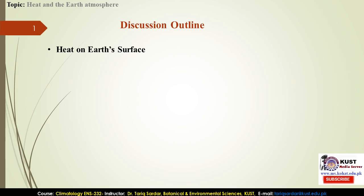We will know about the heat budget on the Earth's surface, coming toward the Earth at the stratospheric level and the Earth's atmospheric level. Up next, we will discuss the greenhouse effect — a very important topic from an environmental aspect — on the basis of its processes, properties, and the role of greenhouse gases on the heat budget of the Earth.